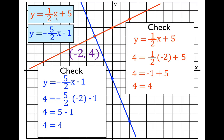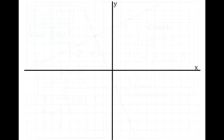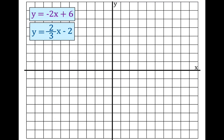Let's try one more. Once again we have two equations and we want to find the solution — where do these two lines intersect? We're going to graph the first one. The y-intercept is plus six, so I put a point at plus six. The slope is minus two, which I write as minus two over one.